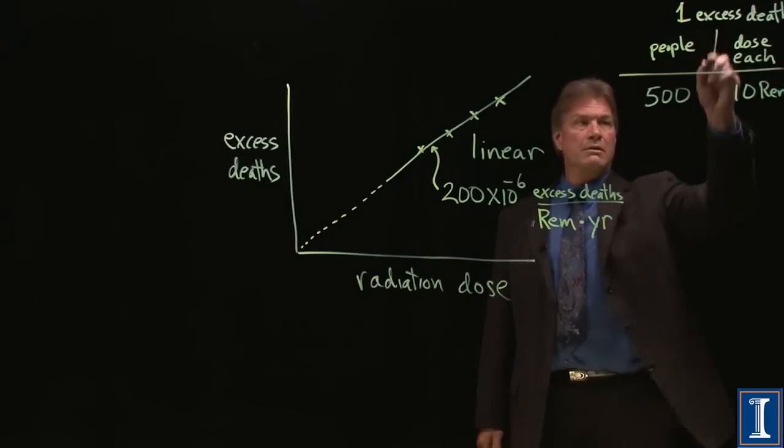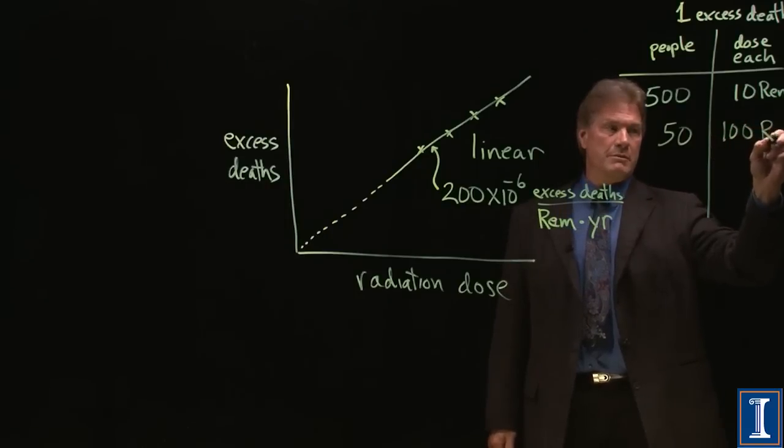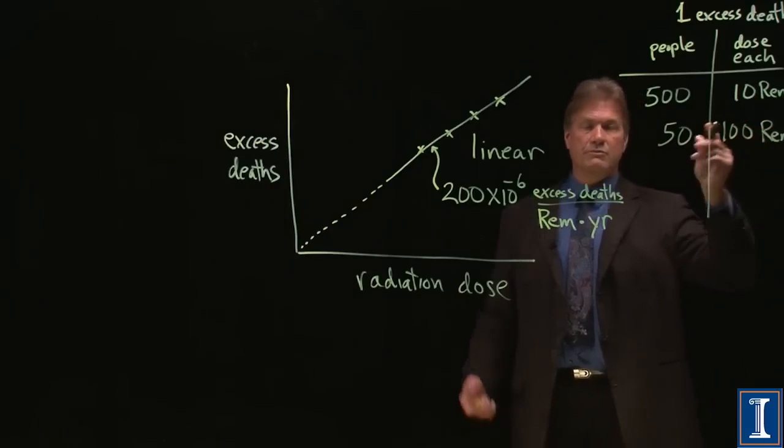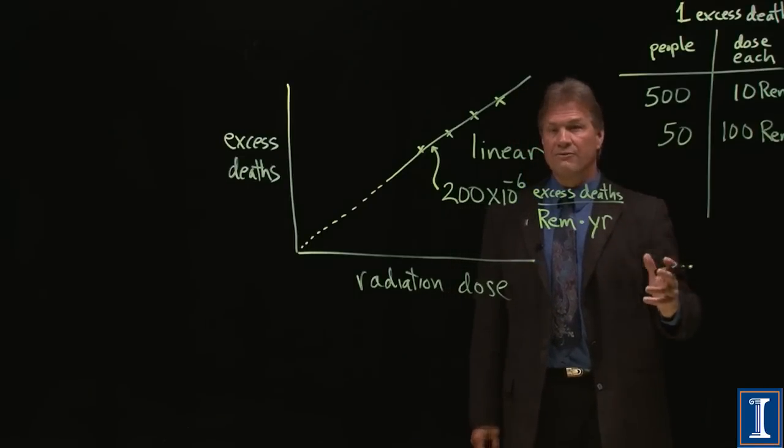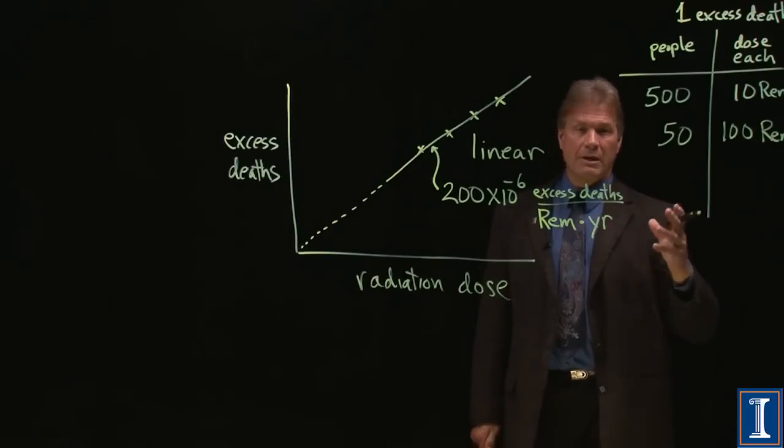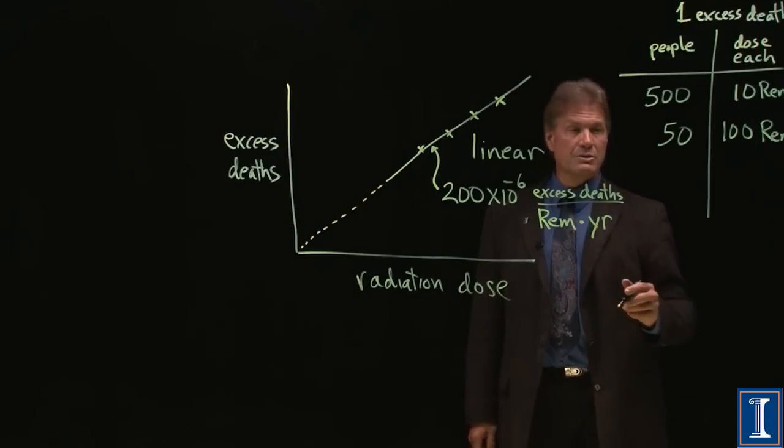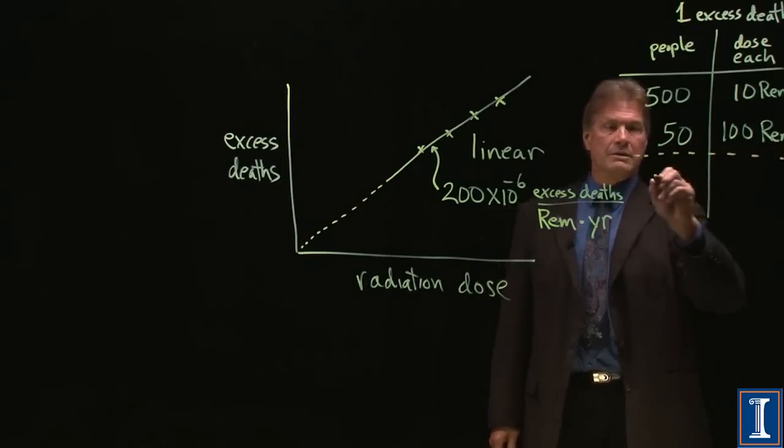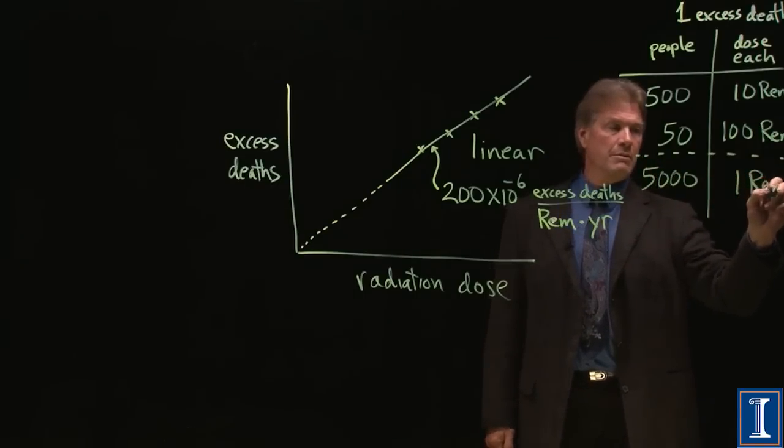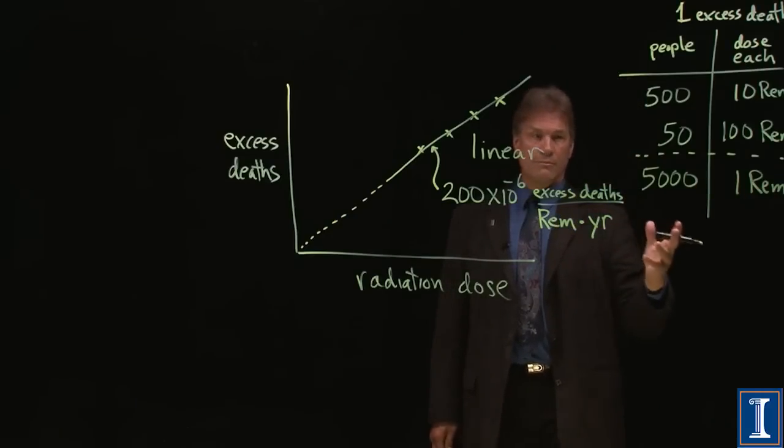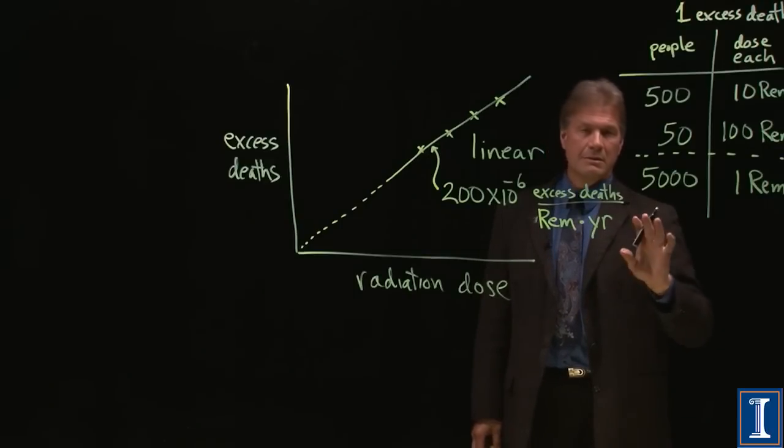Of course, this is linear, meaning that if there are 50 people each getting 100 rem, 100 rem, you're certainly experiencing radiation sickness, you will have a chance of 1 out of 50 of developing an excess cancer every year. It goes the other direction too, right? I could say this is 5,000 people each getting 1 rem. Of those 5,000 people, 1 person is likely to die from cancer from this excess radiation. Maybe.